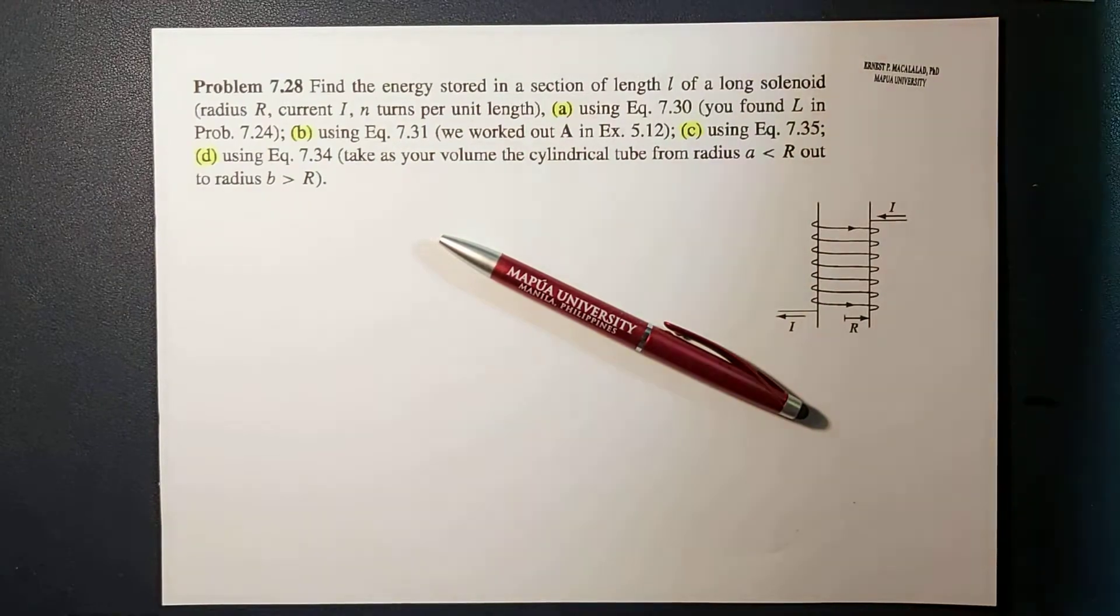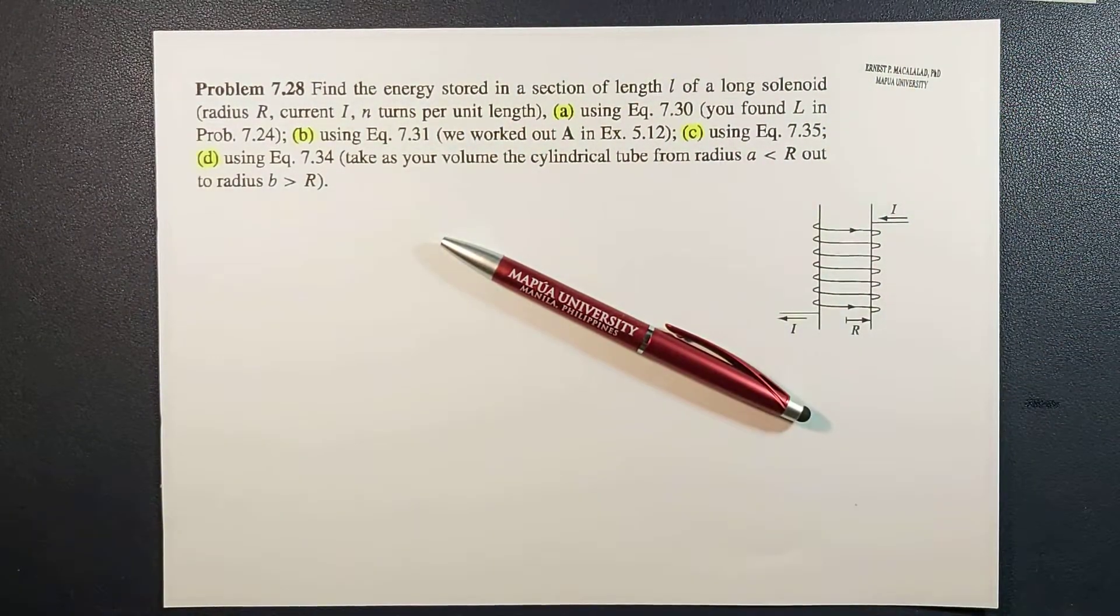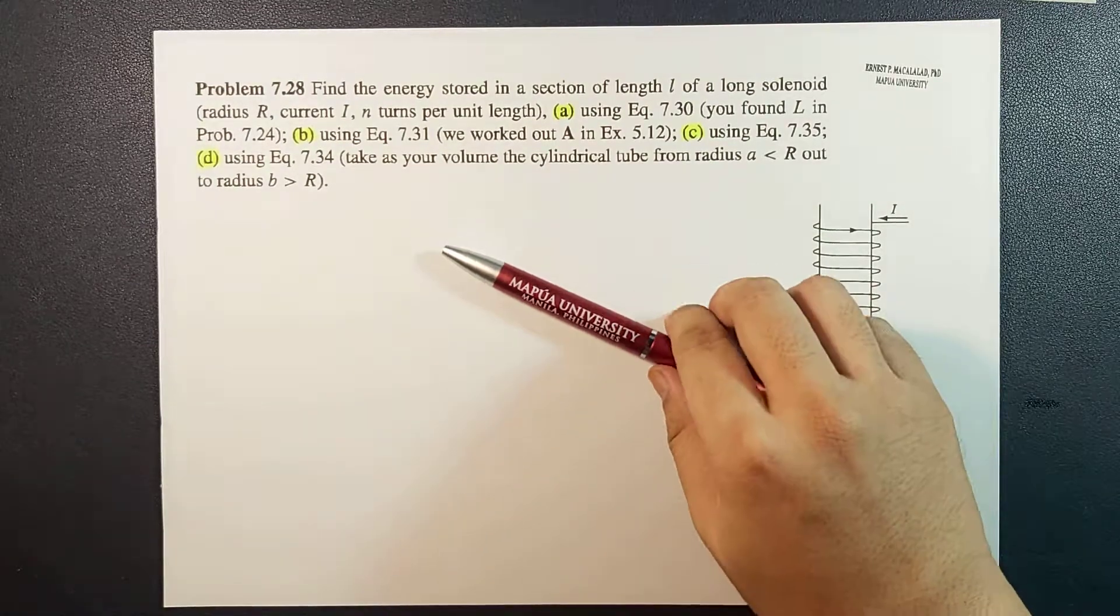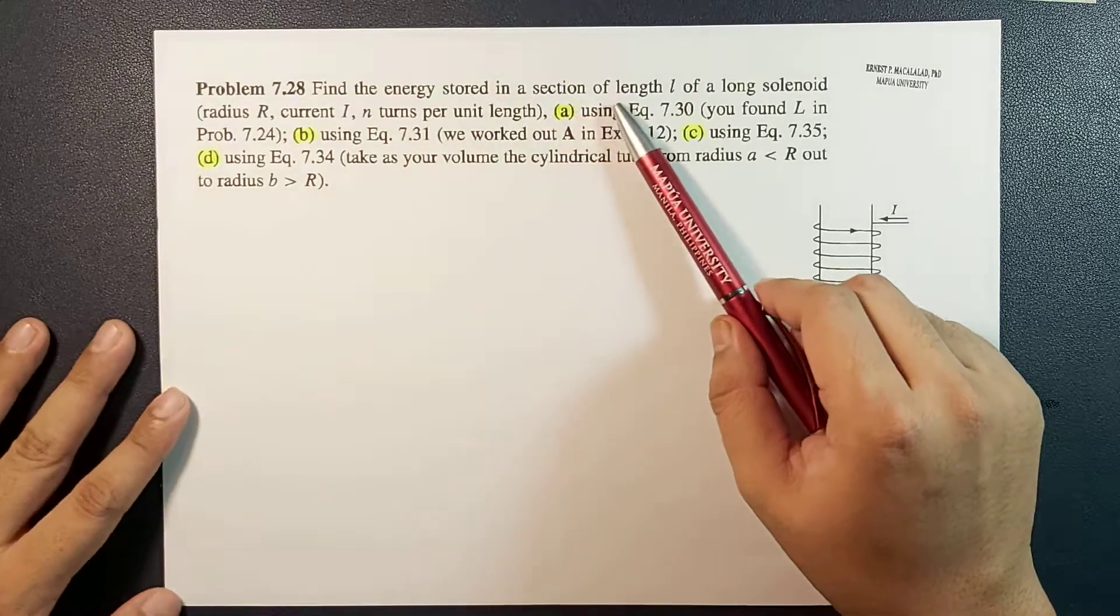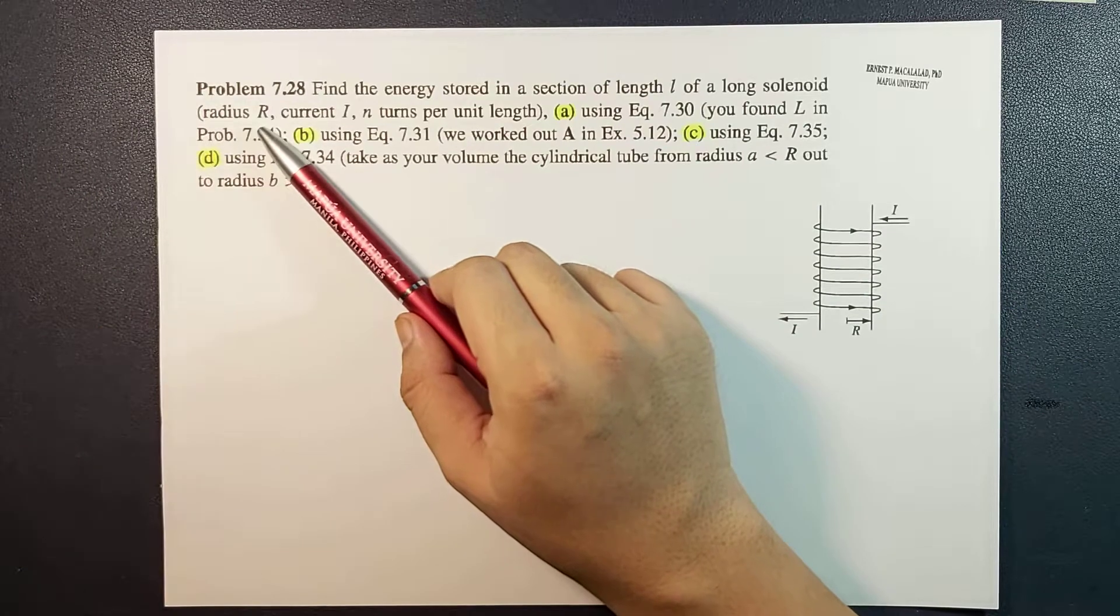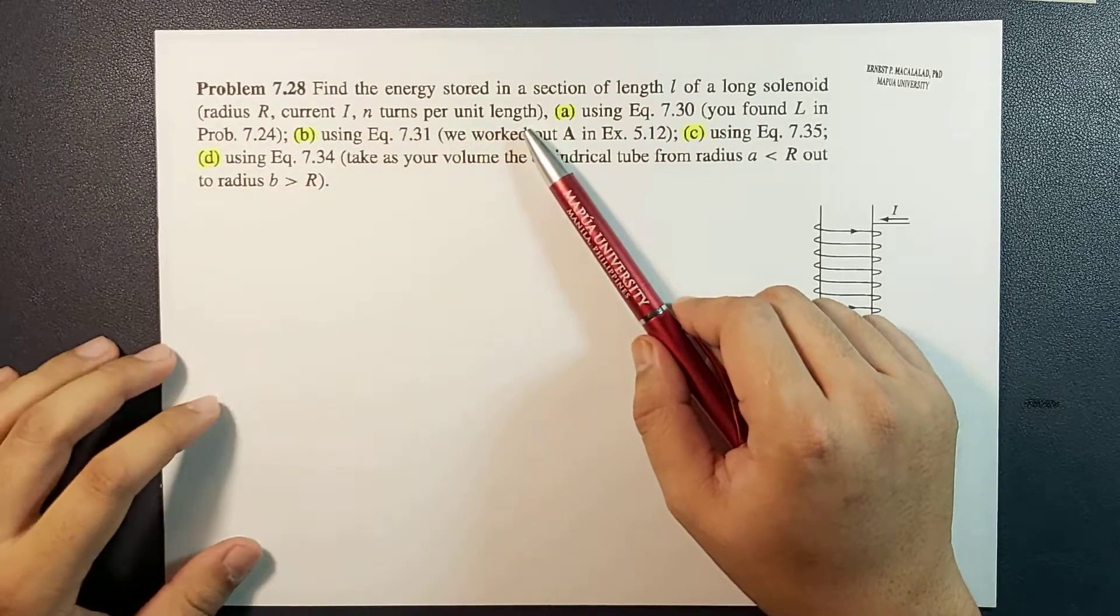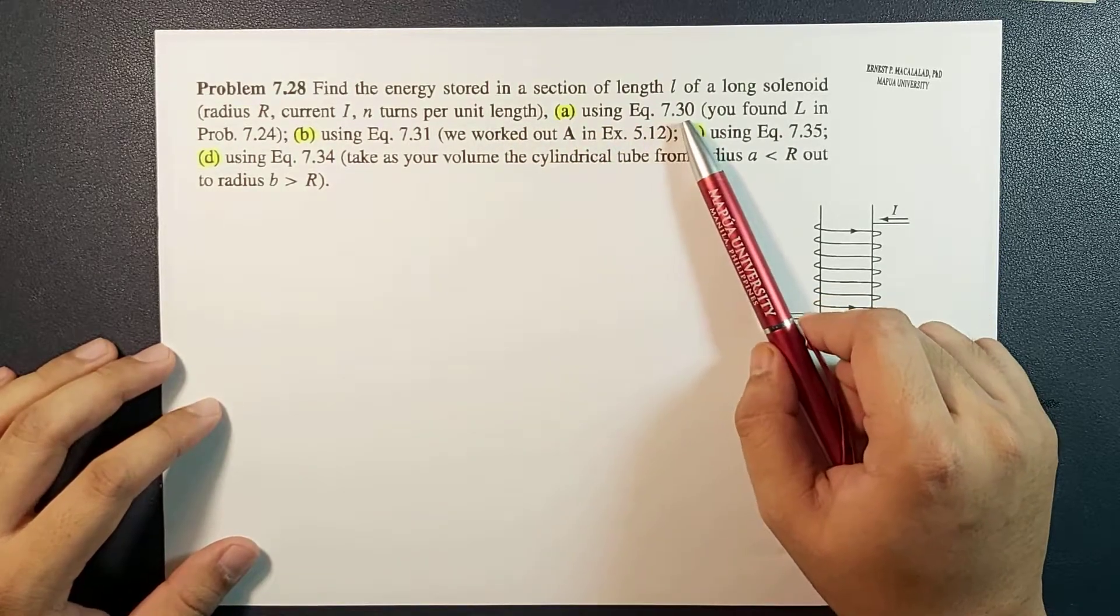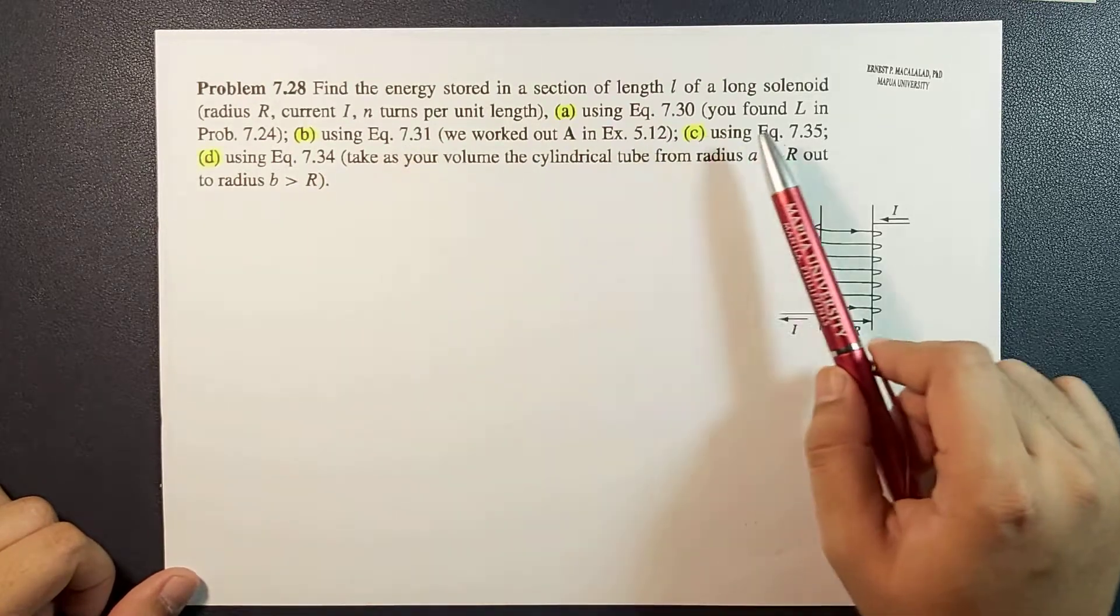What's up guys, it's me Sir Ernest, and today we will solve Problem 7.28 from Griffith's fourth edition. The problem reads: Find the energy stored in a section of length l of a long solenoid of radius r, current i, and n turns per unit length.